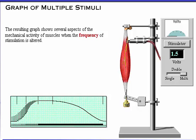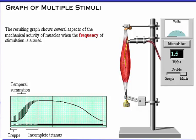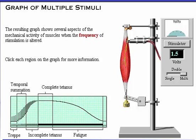The resulting graph shows several aspects of the mechanical activity of muscles when the frequency of stimulation is altered. The phases of this graph include TREP, temporal summation, incomplete tetanus, complete tetanus, and fatigue. Click each region of the graph for more information.